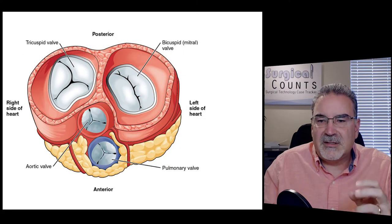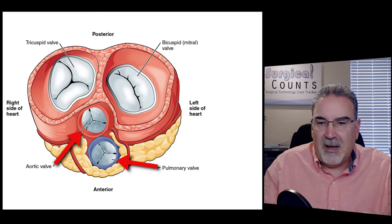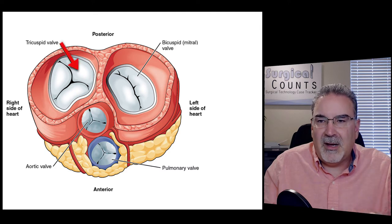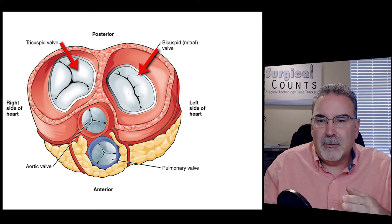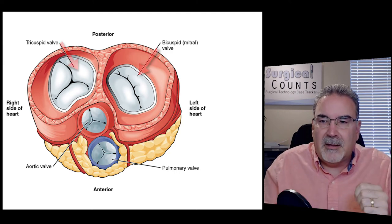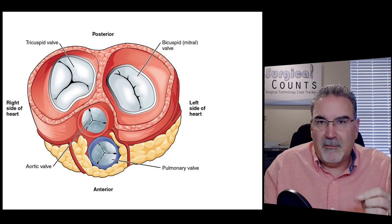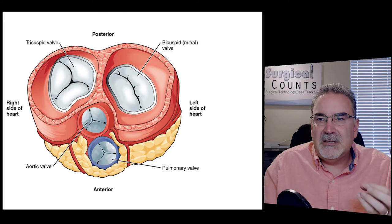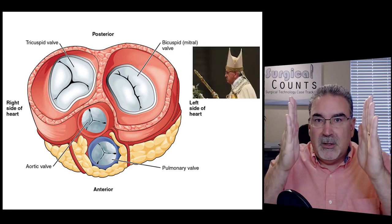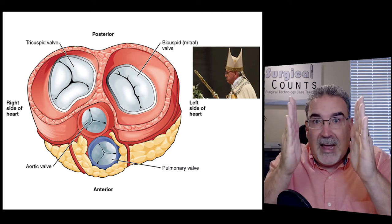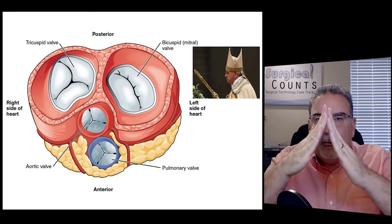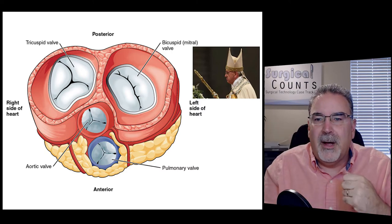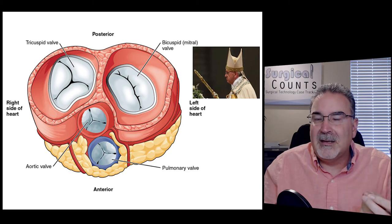Looking more closely at these valves: the aortic and pulmonary valves are where blood leaves the heart. Between the atria and ventricles you have the tricuspid valve - tricuspid because there are three flaps - and the bicuspid valve, because there are only two flaps that come together. The bicuspid valve is also often called the mitral valve. It gets that name from a mitre, the tall hat worn by bishops in the Catholic Church, which has two points on top. The mitral valve looks very similar with its two flaps that open and close to let blood flow through or block it from going the wrong way.